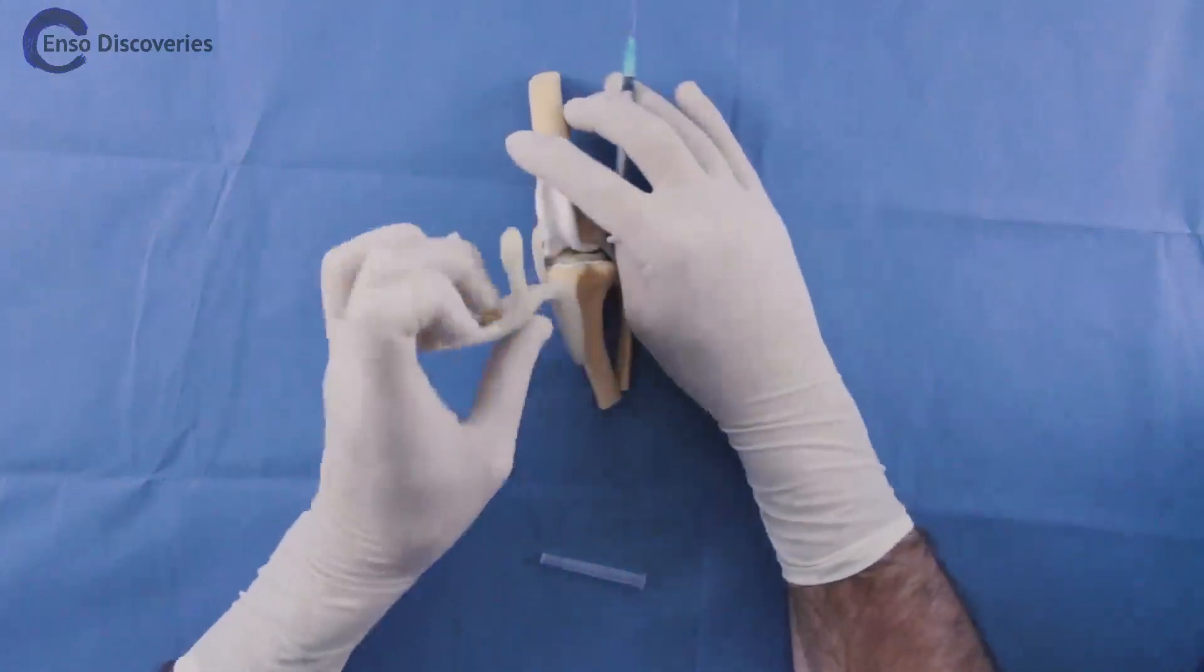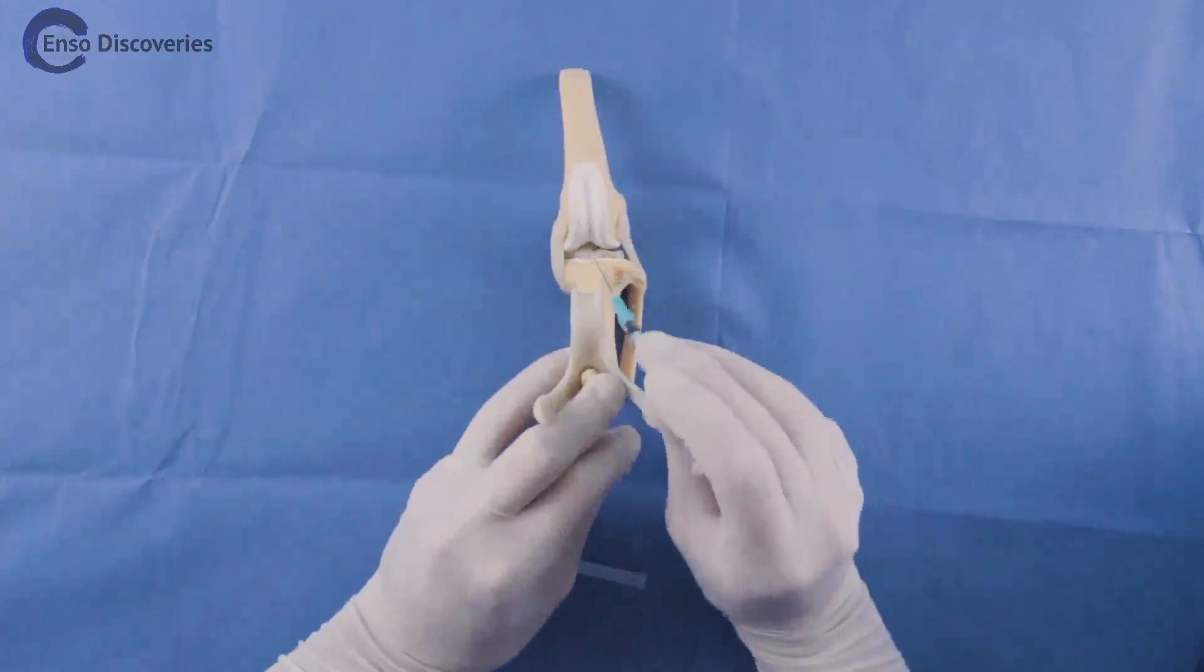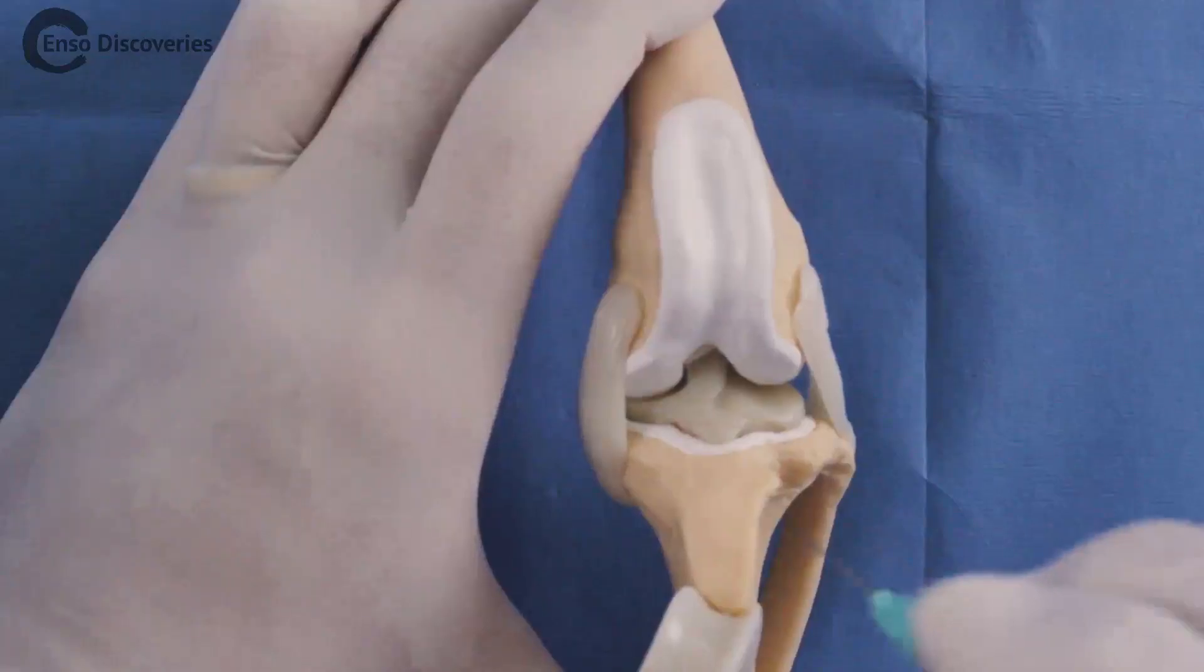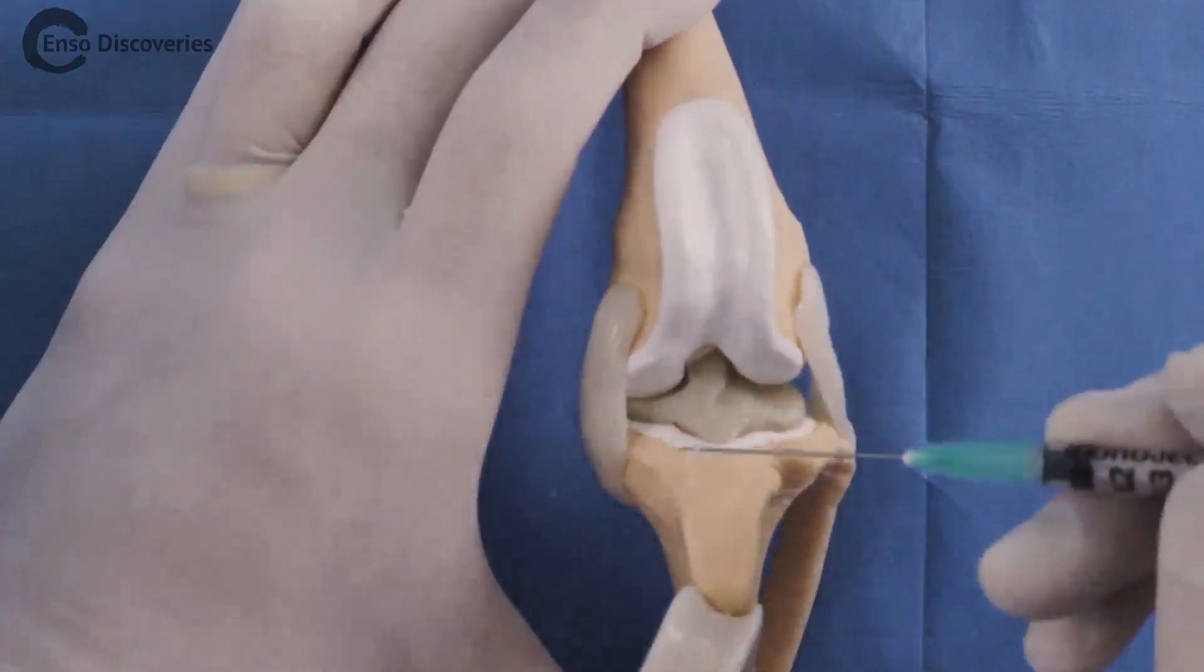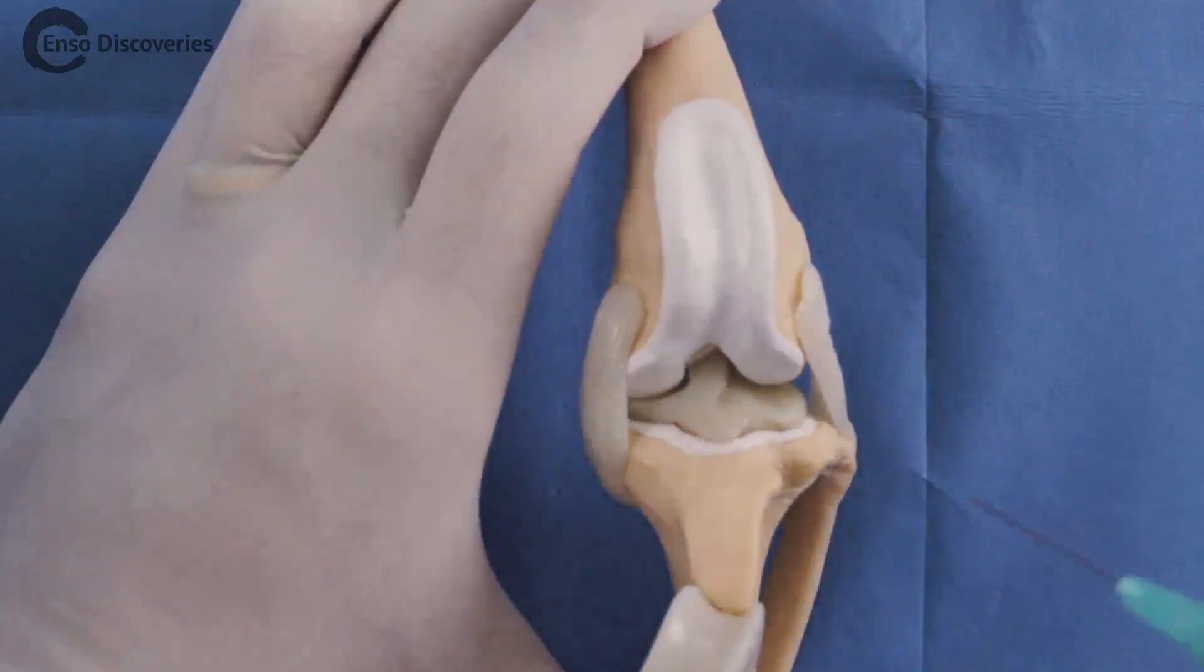Insert the needle in one smooth motion until you hit bone. Your target is the femur at the distal end of the patellar or trochlear groove between the femoral condyles.